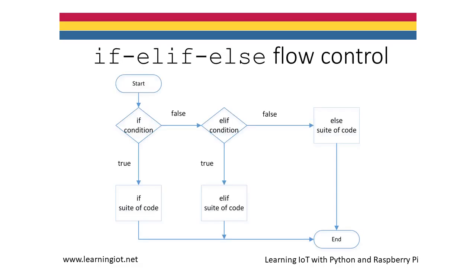This flowchart represents an if-elif-else statement. If the condition in the if clause is true, then the if suite is executed and both the elif and else clauses are skipped. If the condition in the if clause is false, then the if suite is skipped and the condition in the elif clause is tested. If the condition in the elif clause is true, the elif suite is executed and the else clause is skipped. If the elif condition is false, the else clause is executed. Multiple elif clauses are permitted and the conditions are tested one by one until a true condition is found; then the associated suite is executed and the rest of the clauses are skipped. If none of the conditions are true, the else clause is executed if there is one.